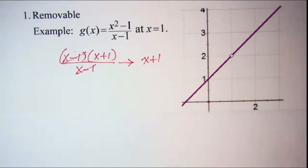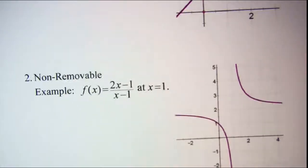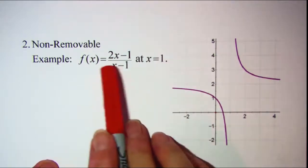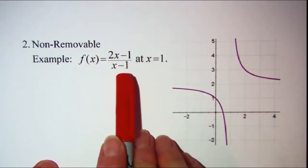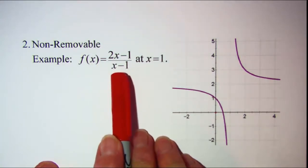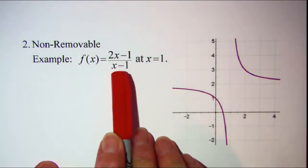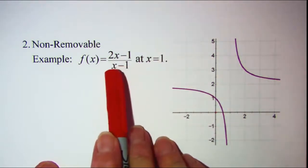The other type of discontinuity is a non-removable discontinuity. The function that we're using as an example is f of x is equal to 2x minus 1 over x minus 1.